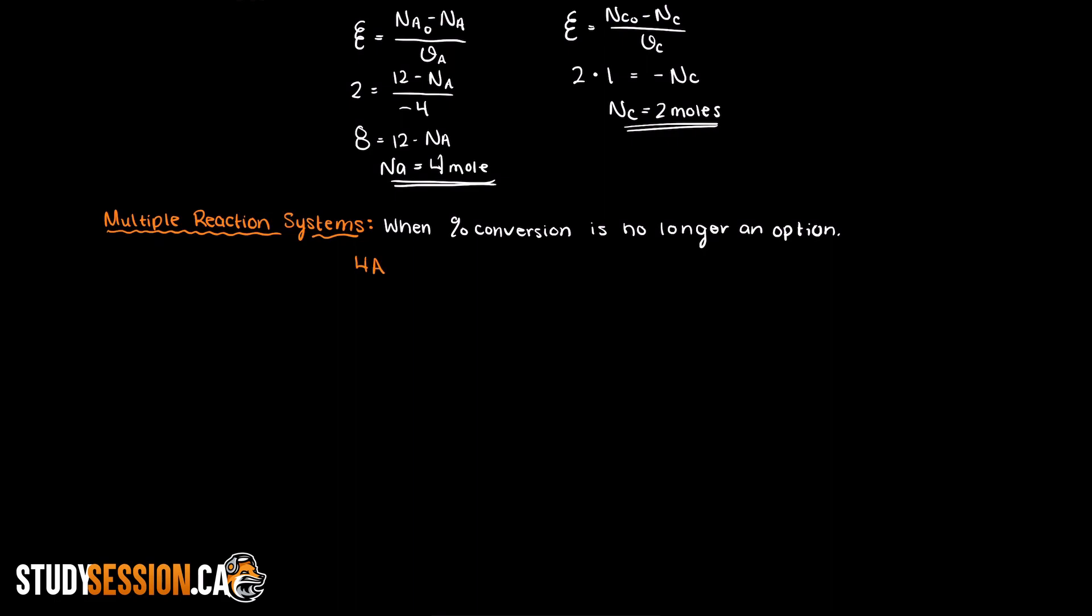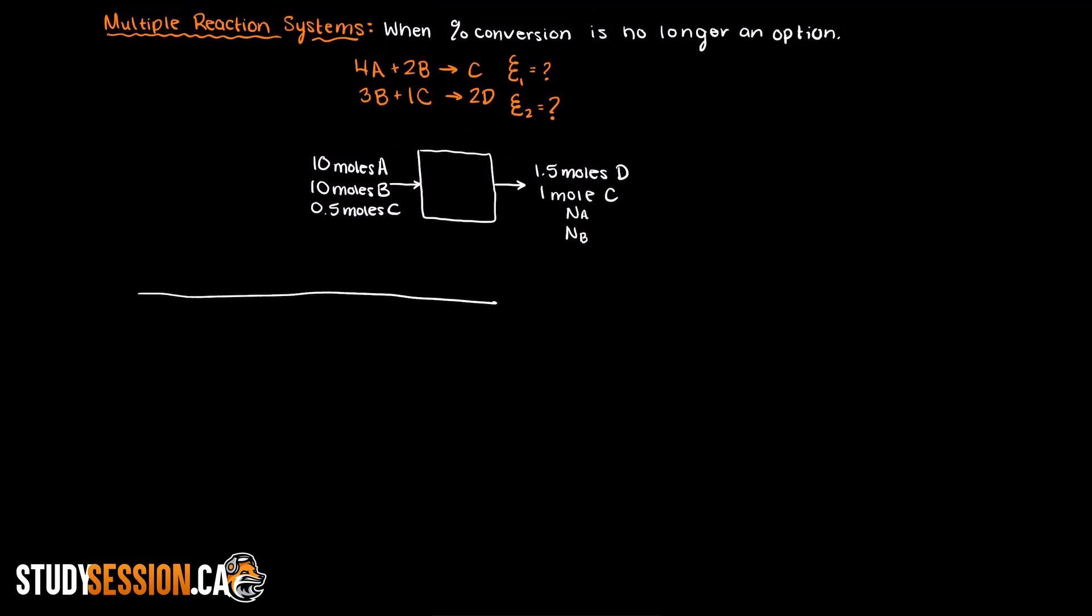So let's say that in reaction 1 we have the same reaction as above and we denote the extent of reaction for this reaction as epsilon 1. And for reaction 2 let's say that we have 3B plus 1C equals 2D. Now that we have defined all of our arbitrary reactions, let's assume that we have a batch reactor with 10 moles of A, 10 moles of B, and 0.5 moles of C coming in. Additionally, we also know that 1.5 moles of D and 1 mole of C are remaining after the reaction is completed.